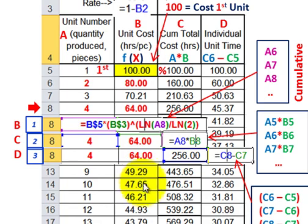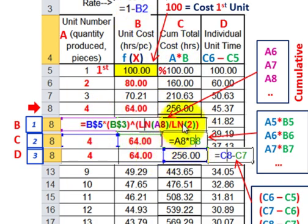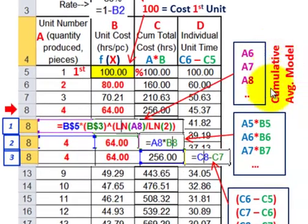Let me back off so you can see the reference. For column A, you just enter a single number. Column B uses the learning curve function formula. Column C uses that A-times-B formula, and column D uses the difference formula — current C minus previous C. Remember, this was the cumulative average model.